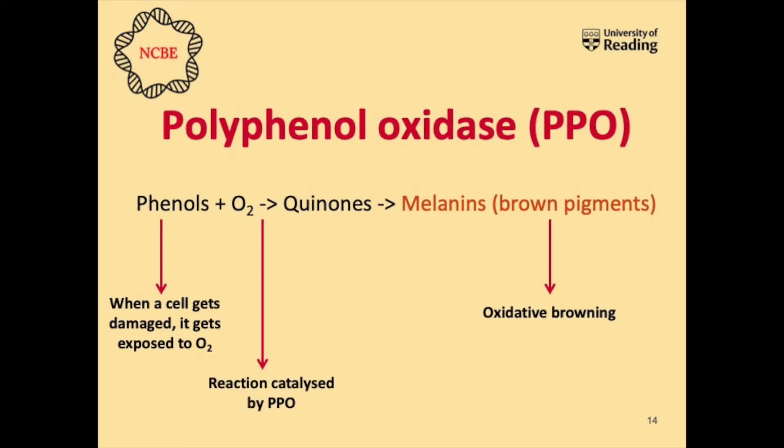Polyphenol oxidase catalyses the reaction between a phenol and oxygen molecules, which produces a product called quinones, which then produces a product called melanins. Melanins are brown pigments — they're the pigments that colour your hair and your skin.